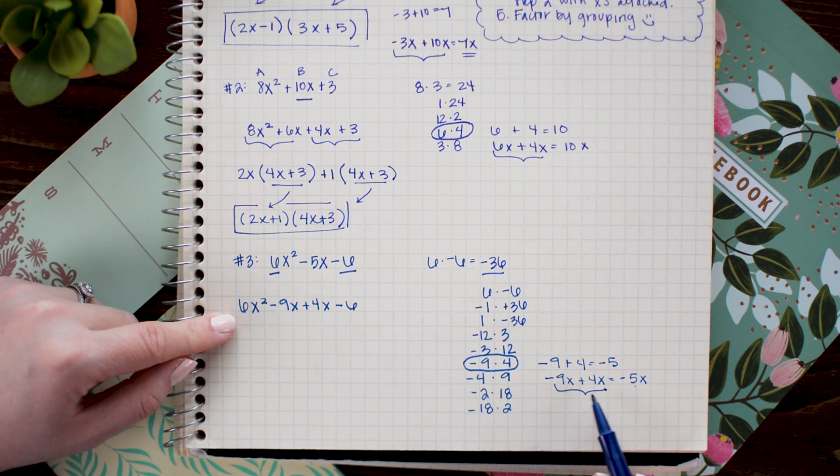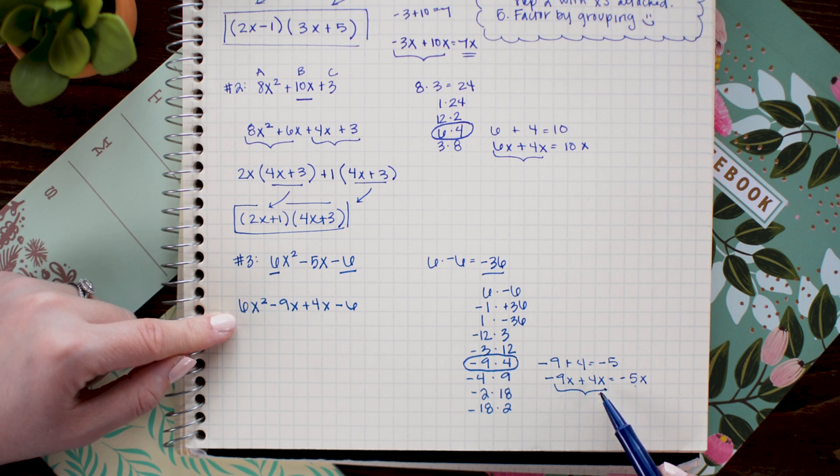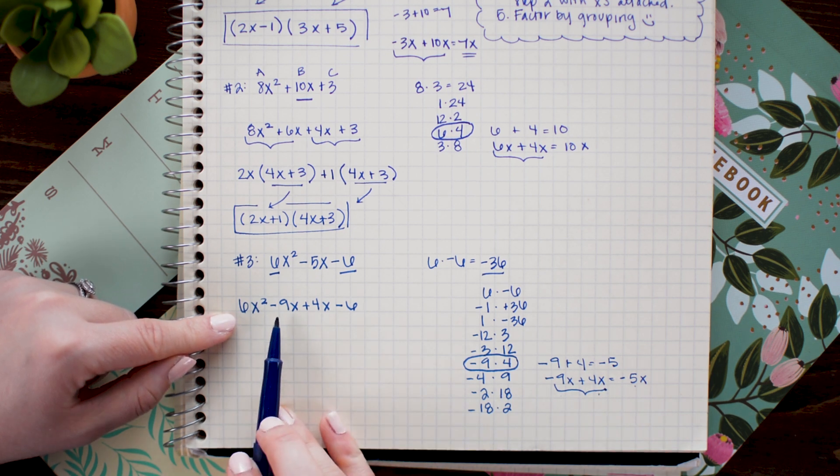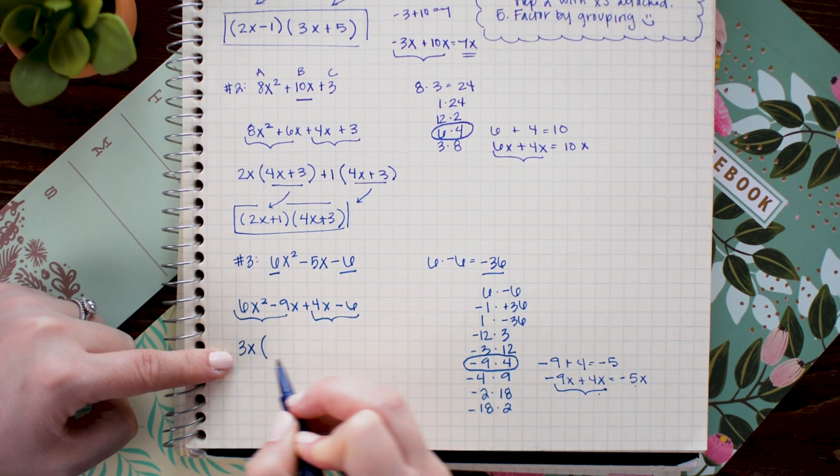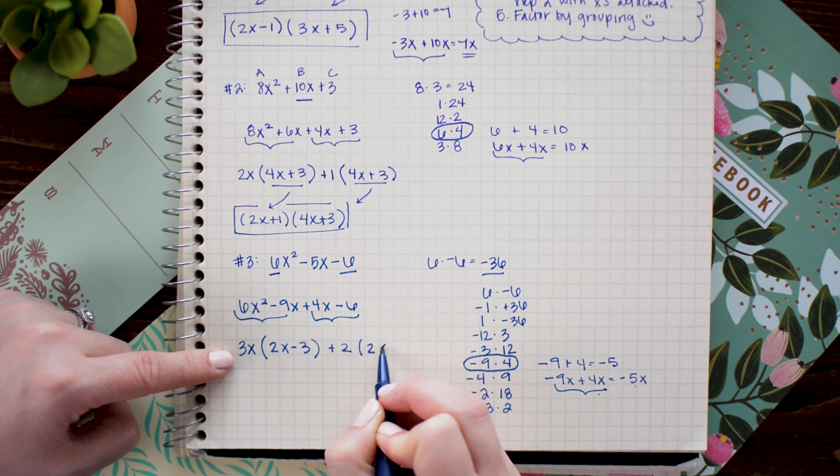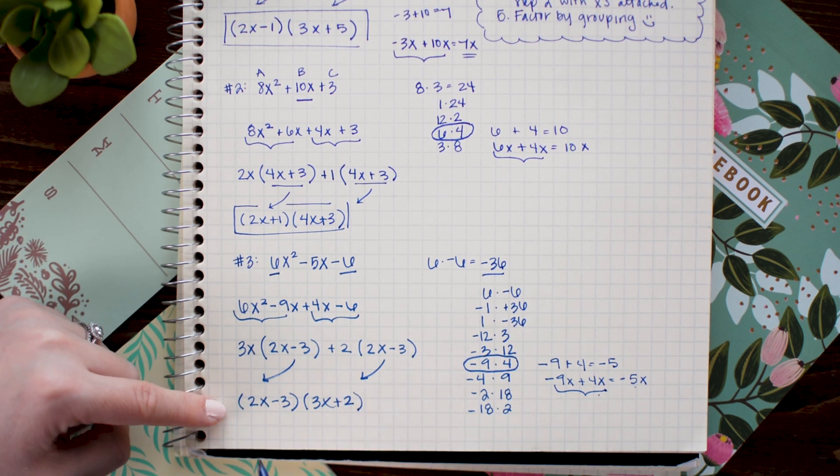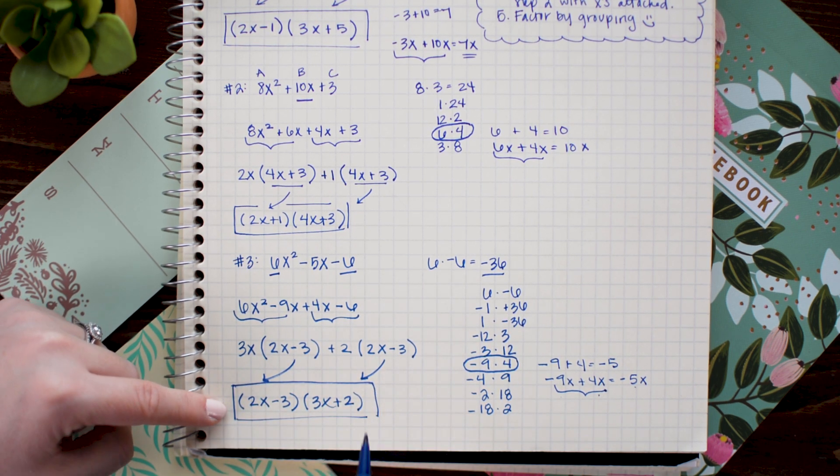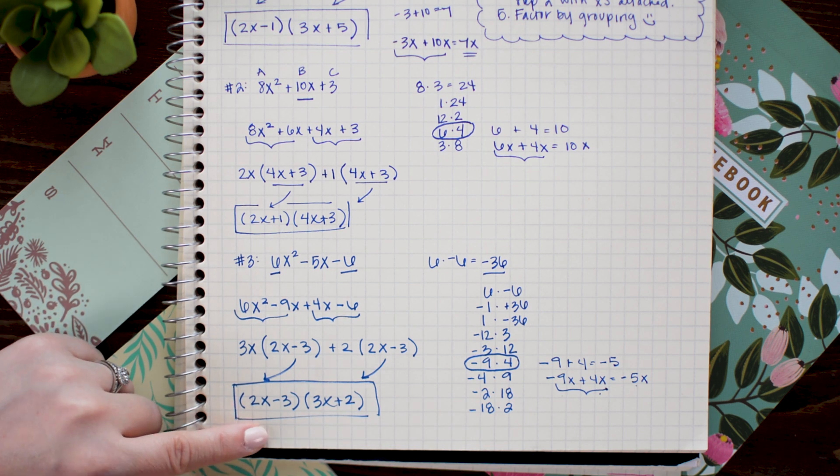I'd like to note here that it doesn't matter which order these two terms are in so long as the signs are correct. So negative is on the 9 and positive is on the 4. My factoring would work just as well if I put 4x minus 9x here. Lastly I'll do factor by grouping. There we go. We once again have factored 6x squared minus 5x minus 6 into the binomials 2x minus 3 times 3x plus 2.